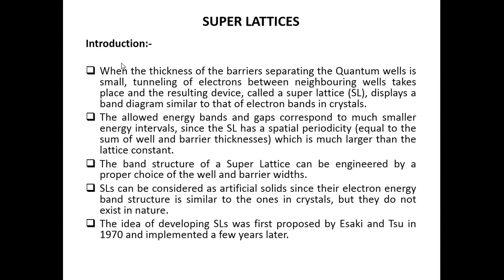The allowed energy bands and gaps in a super lattice correspond to much smaller energy levels because the super lattice has a spatial periodicity equal to the sum of the well and barrier thickness. This spatial periodicity of the super lattice — the well thickness and the barrier thickness together — is larger than the lattice constant. That is why the allowed energy bands and gaps are smaller energy intervals. The band structure of a super lattice can be engineered by a proper choice of well and barrier width or barrier thickness.